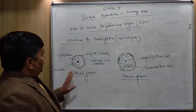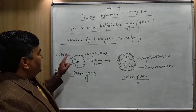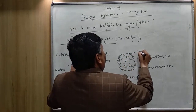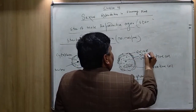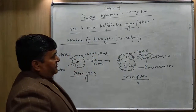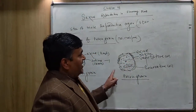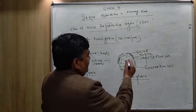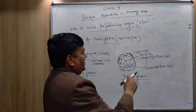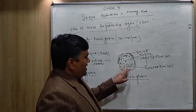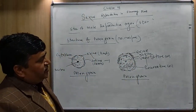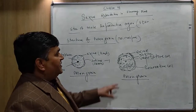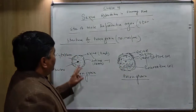The pollen grain has two walls. The outer wall is the exine, which has a rough surface. The inner wall is the intine, which has a smooth surface. It has two cells inside: the bigger cell is the vegetative cell, and the smaller cell is the generative cell.